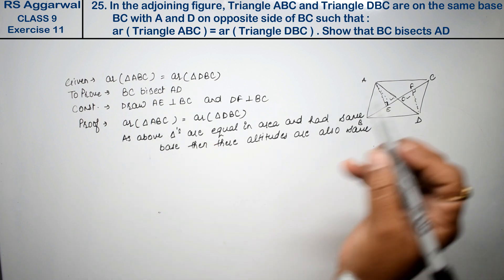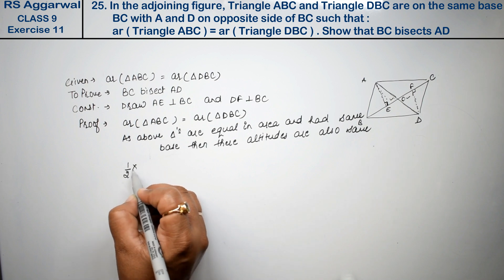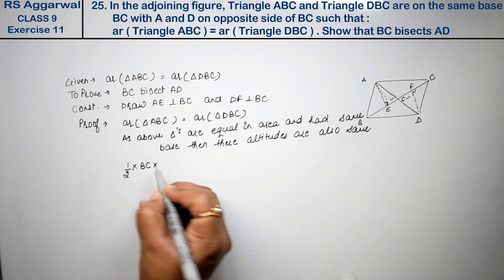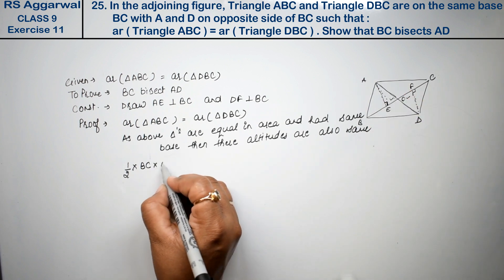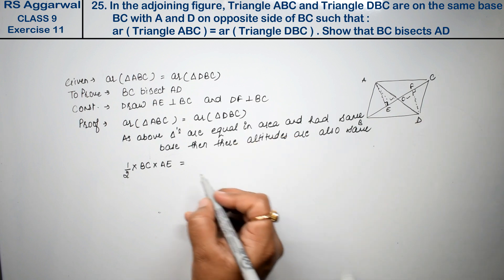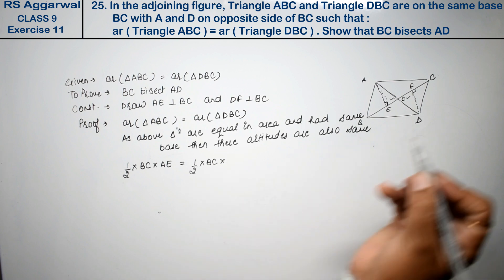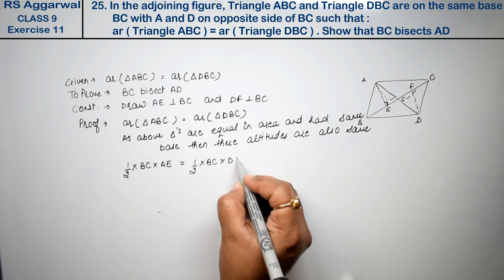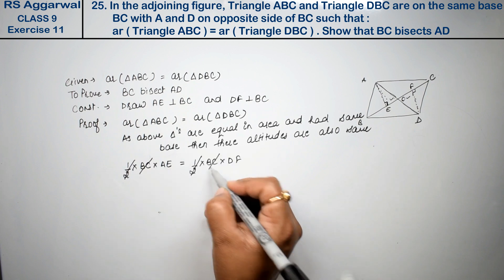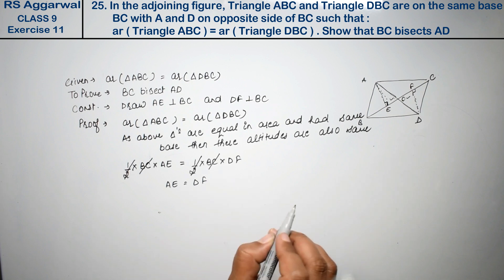If I write ABC triangle, the area is half into base. Base BC was the same base, and height is AE which is perpendicular. If I write DBC, then half BC and height is DF. So it's half to half cancel, and BC cancel. So AE equals DF.